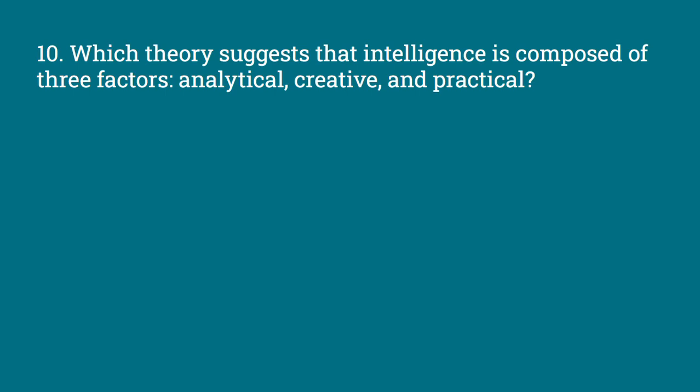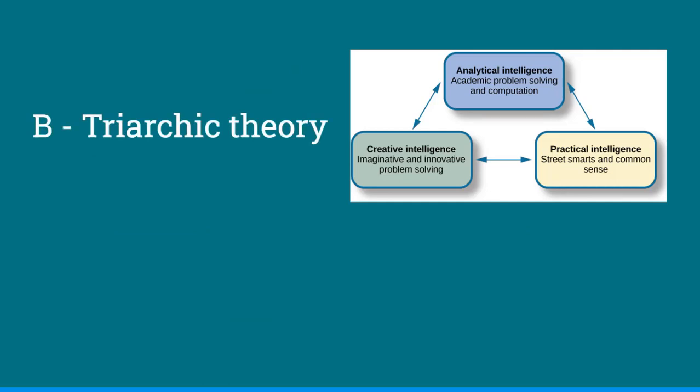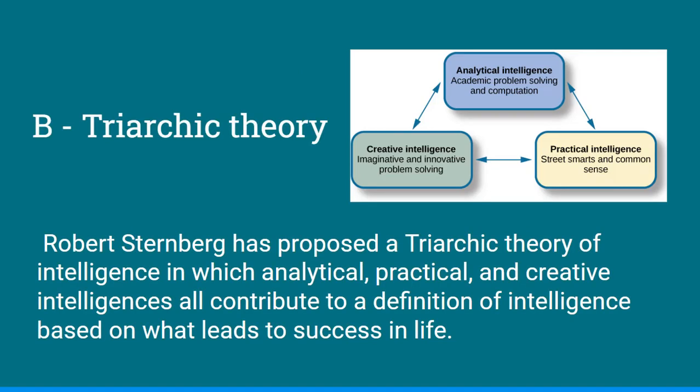Which theory suggests that intelligence is composed of three factors — Analytical, Creative, and Practical? The options are Multiple Intelligences Theory, Triarchic Theory of Intelligence, Emotional Intelligence Theory, Growth Mindset Theory, and Unholy Trinity. The answer is B, Triarchic Theory. Robert Sternberg proposed a Triarchic Theory of Intelligence, in which analytical, practical, and creative intelligences all contribute to a definition of intelligence based on what leads to success in life.